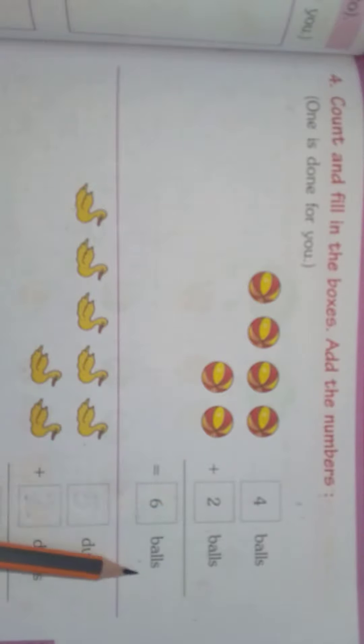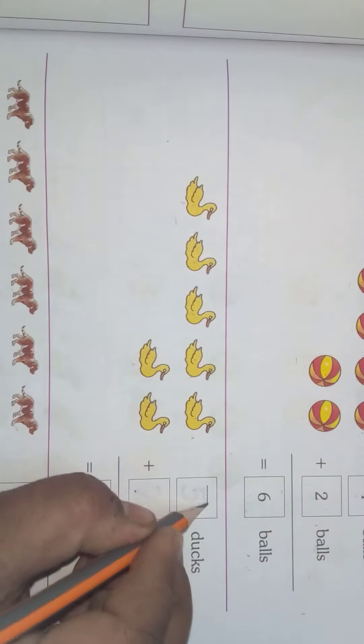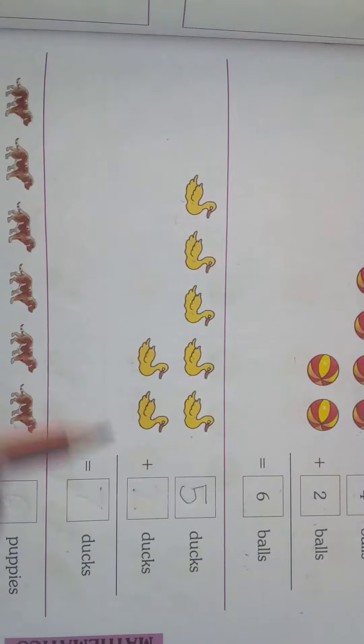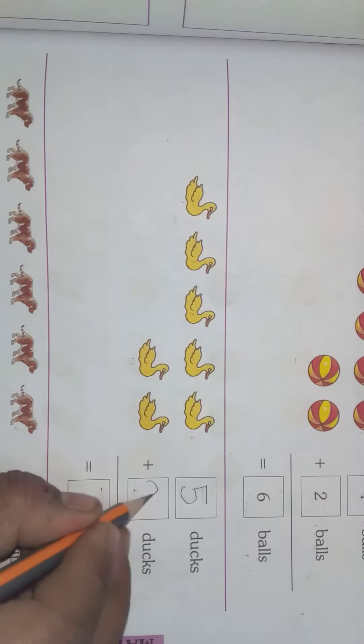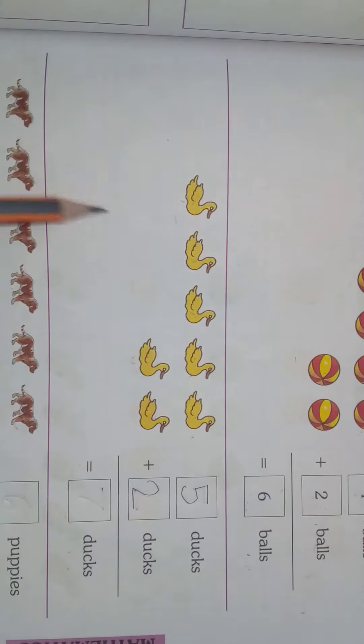Now next we will see. Here they have given ducks. 1, 2, 3, 4, 5 - five ducks, plus 1, 2 - two ducks, is equal to blank ducks.